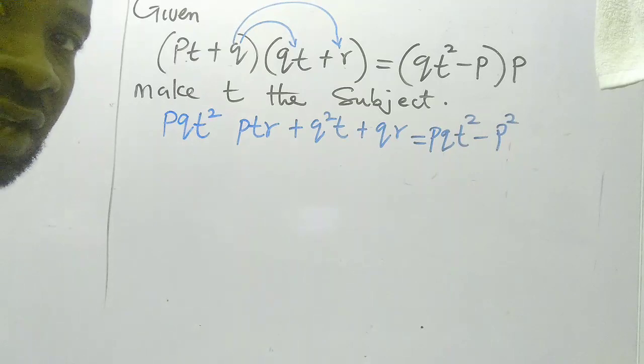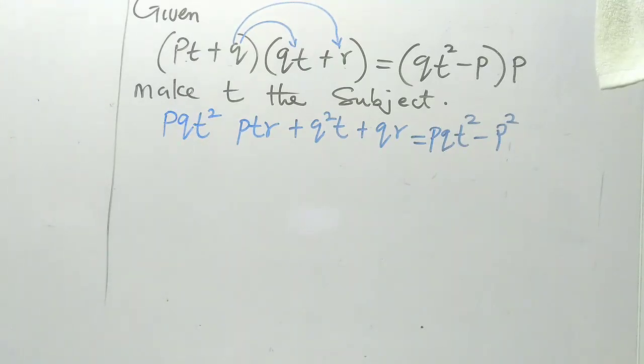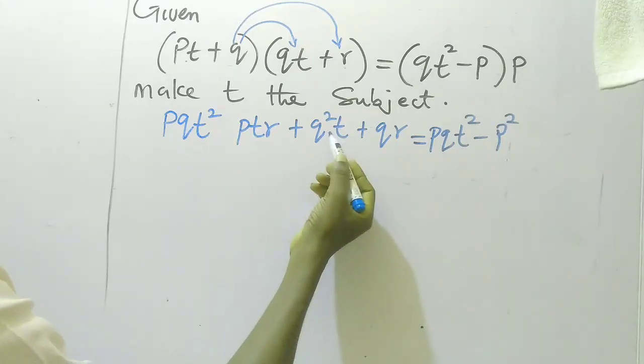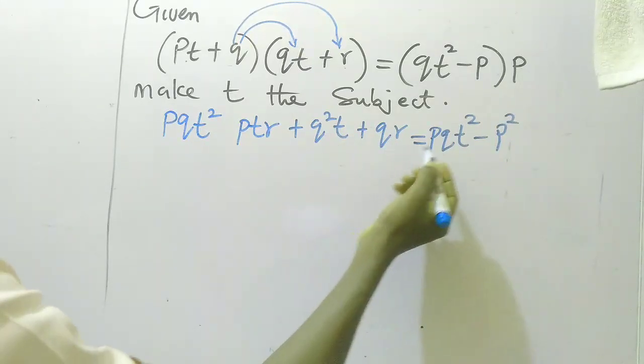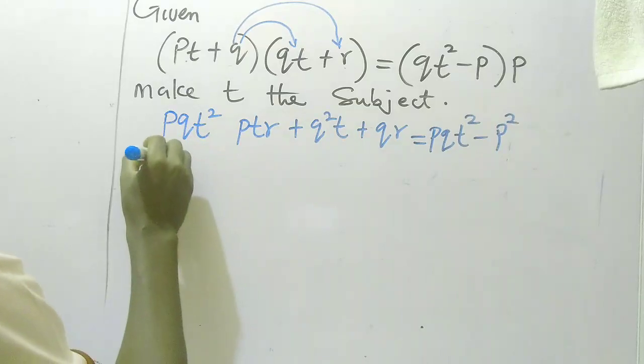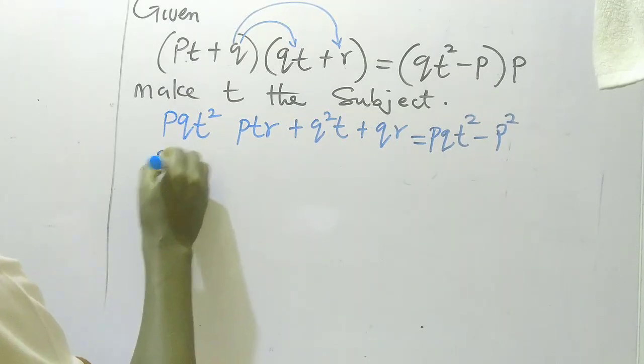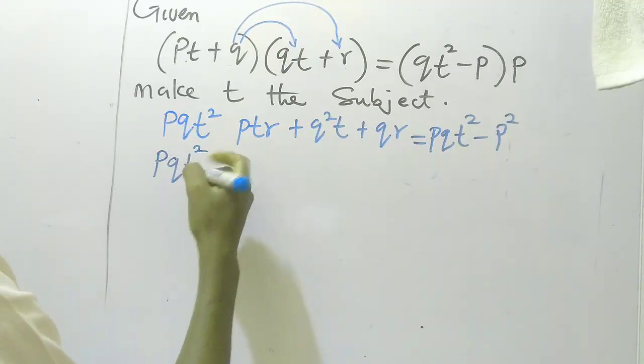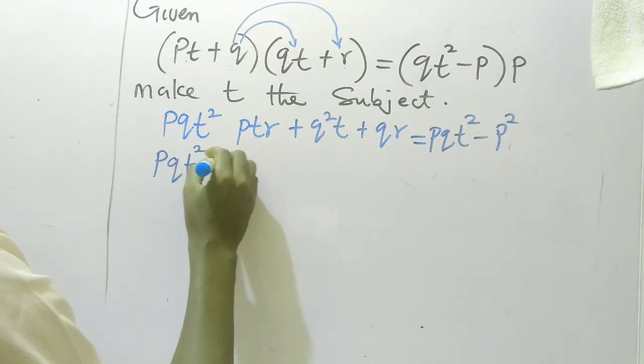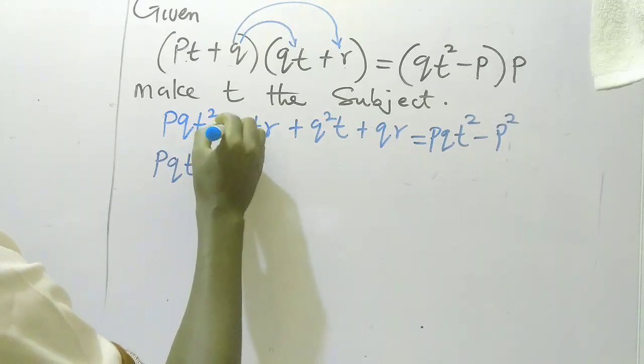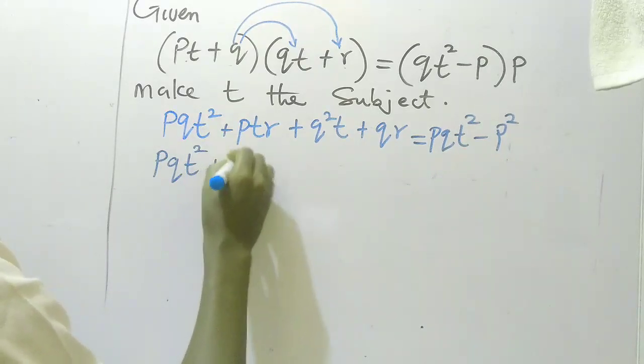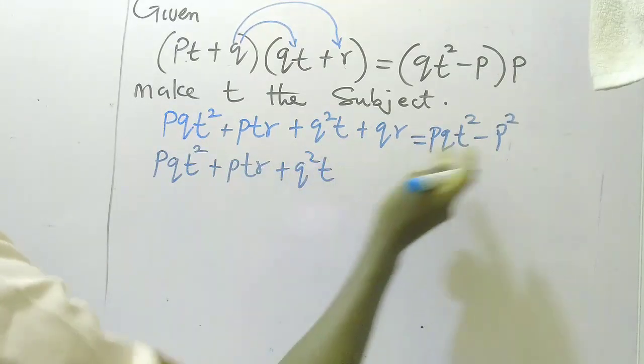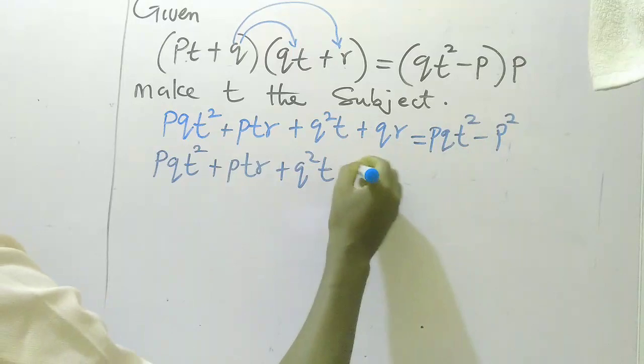Okay, I've gotten that. So the next thing I'm going to do now is I'm going to collect all the ones where the t—I'm going to bring all the t's to one side, the ones that contain t. This contains t. Then I have pt, q²t, this one contains t, I'll bring it over.